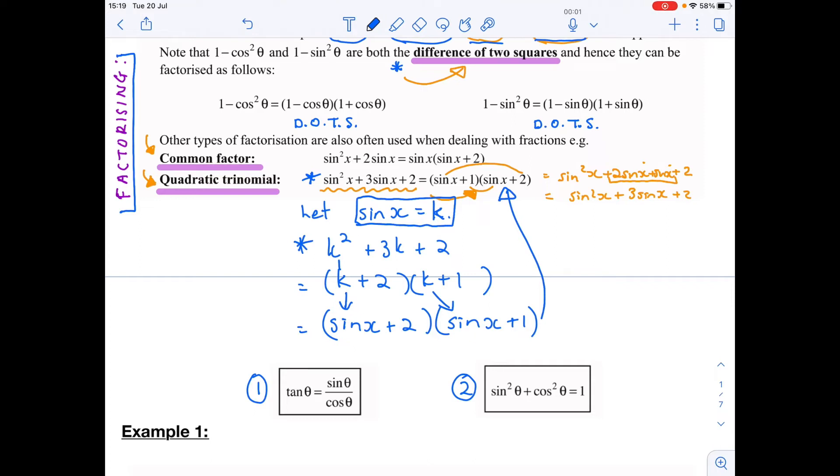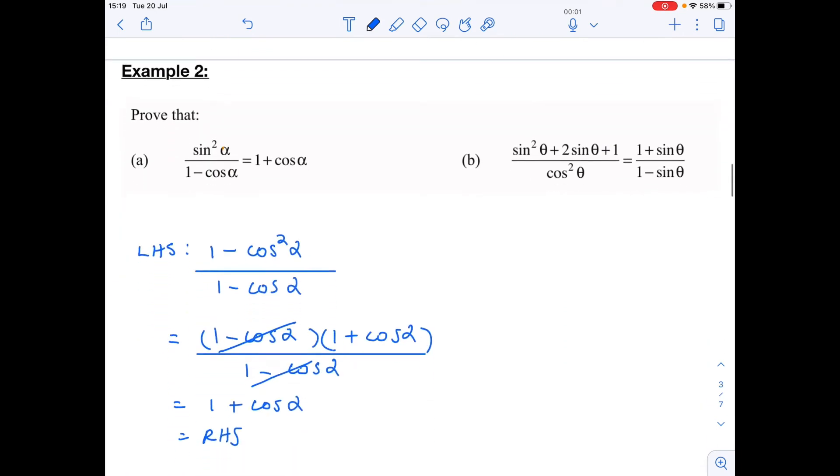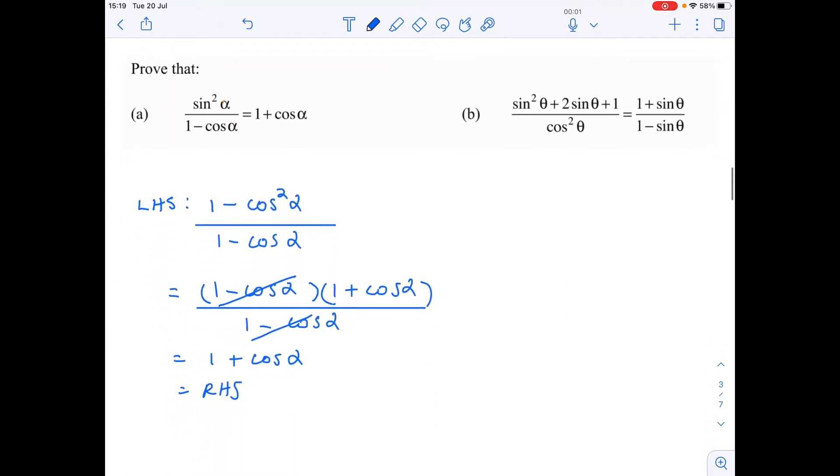So let's do an example with that. We've done example 1, we did 2a, now let's have a look at 2b. We need to prove that the left hand side is equal to the right hand side. So let's start with my left hand side.